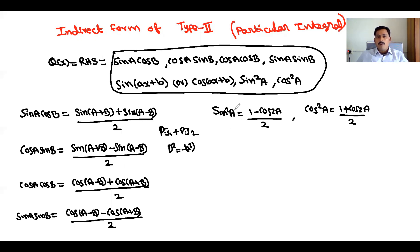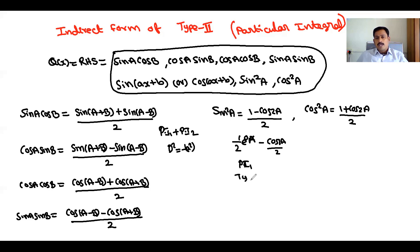For the form sin²A: sin²A is written as (1 − cos2A) / 2. So the 1/2 part comes under Type 1 — we can write it as e^(0·x) form — and the cos2A / 2 part is particular integral Type 2 form. We can then solve the problem.